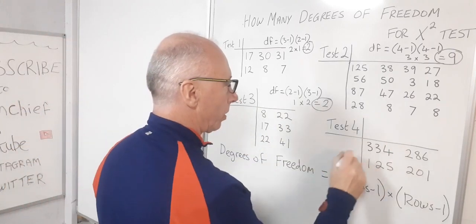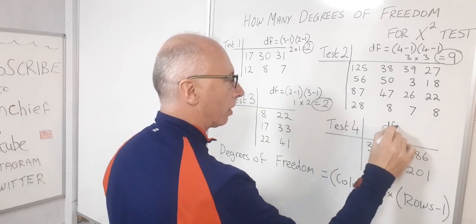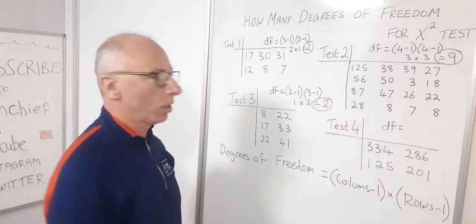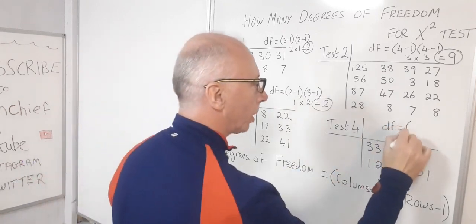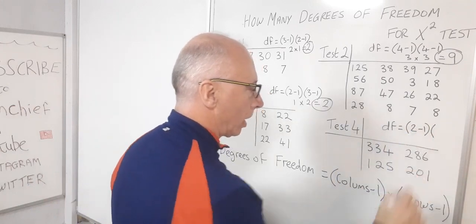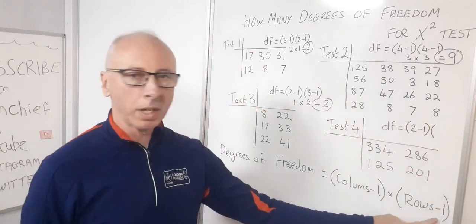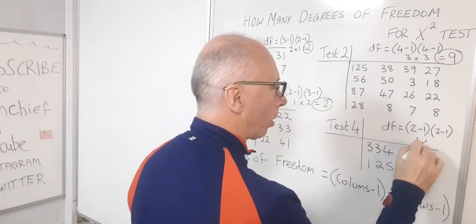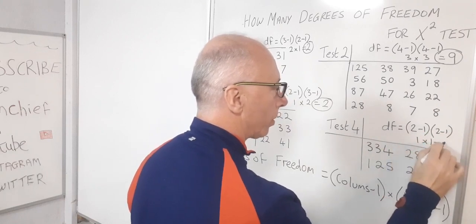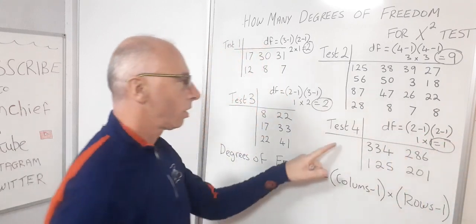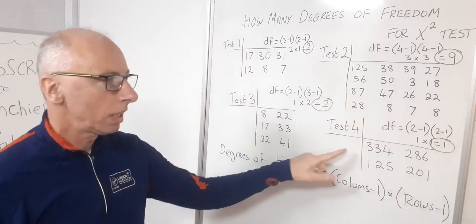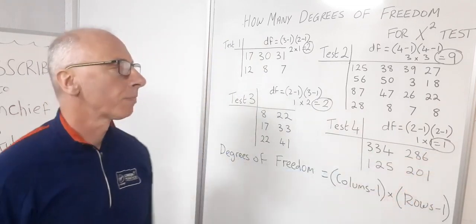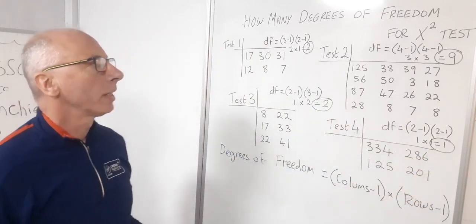Test four: degrees of freedom — only two columns subtract one, and two rows subtract one. That gives one times one, which equals one. So test four has only one degree of freedom.